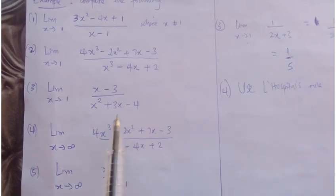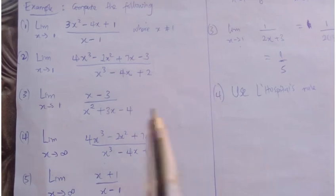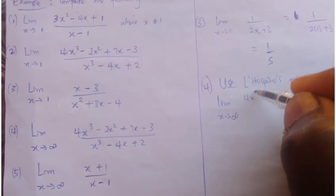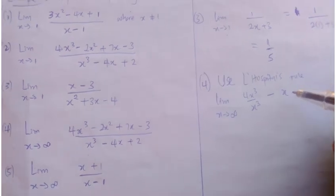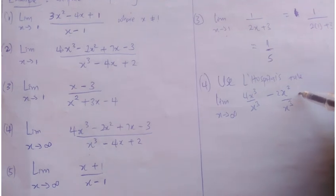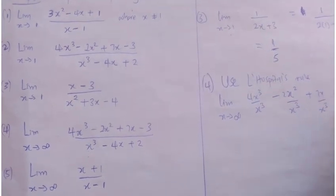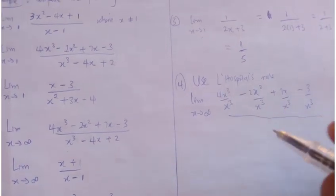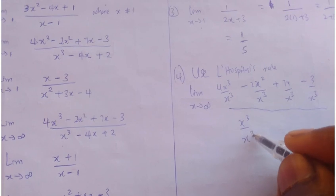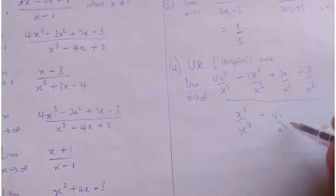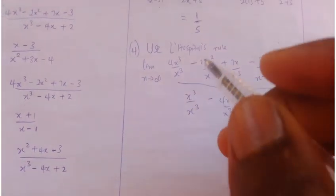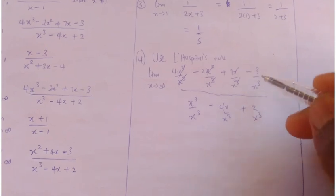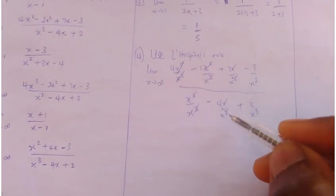For question 4, the highest power in the numerator is 3 and in the denominator is 3. So I divide everything by x³. The numerator becomes: (4x³/x³) - (2x²/x³) + (7x/x³) - (3/x³), and the denominator becomes: (x³/x³) - (4x/x³) + (2/x³). Simplifying: numerator = 4 - 2/x + 7/x² - 3/x³; denominator = 1 - 4/x² + 2/x³.